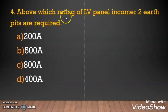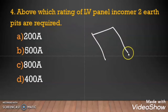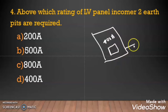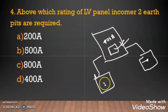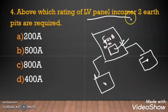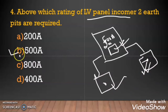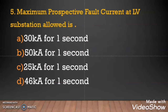Question 4: Above which rating of LV panel incomer are 2 earth pits required? As per ADDC regulation, suppose you have one LV panel and the breaker rating is 400 ampere — you need an earthing system for that panel. The answer is 500 ampere or above. For LV panel incomer rated 500 ampere or above, 2 separate earth pits are required. So the answer is option B, 500 ampere or above.